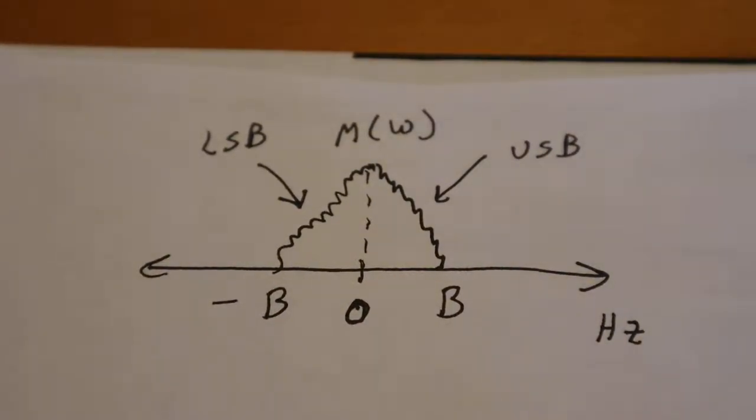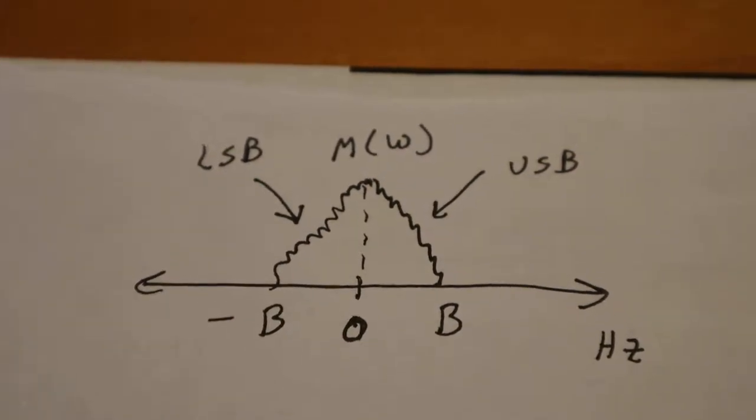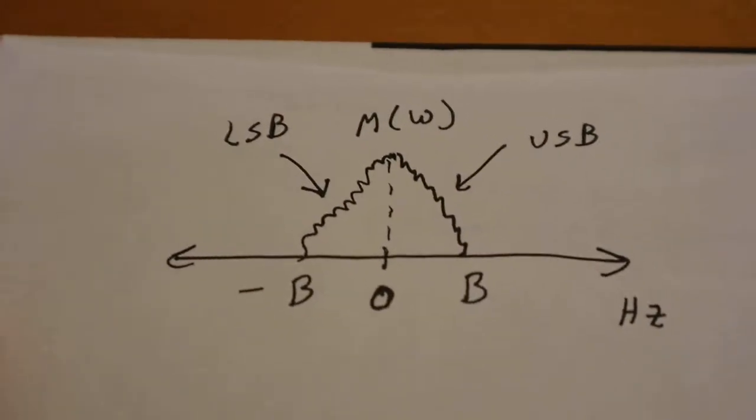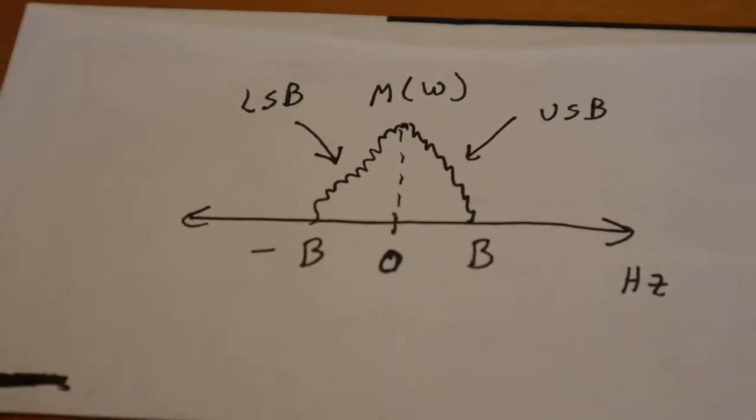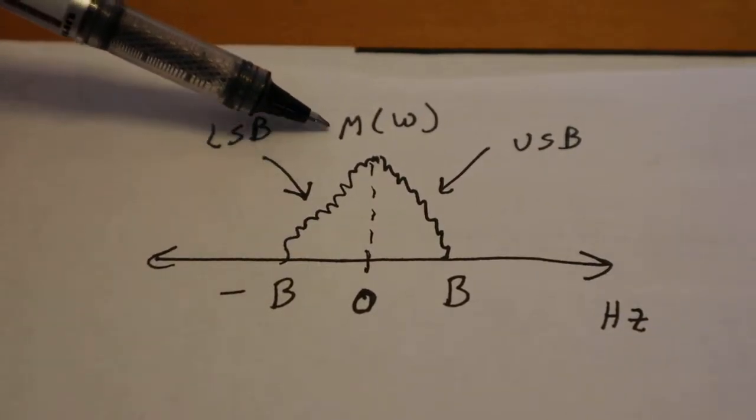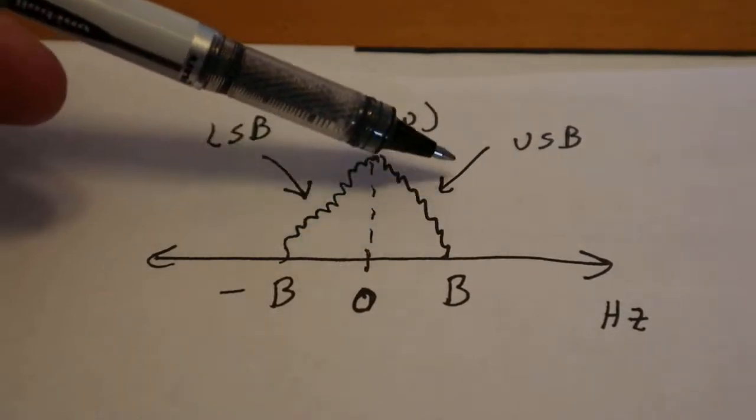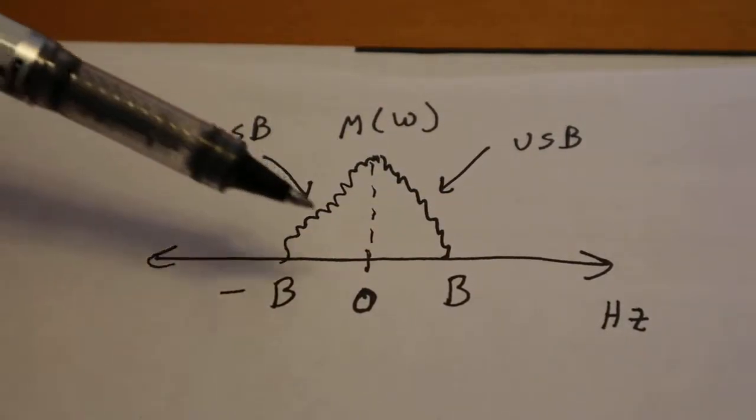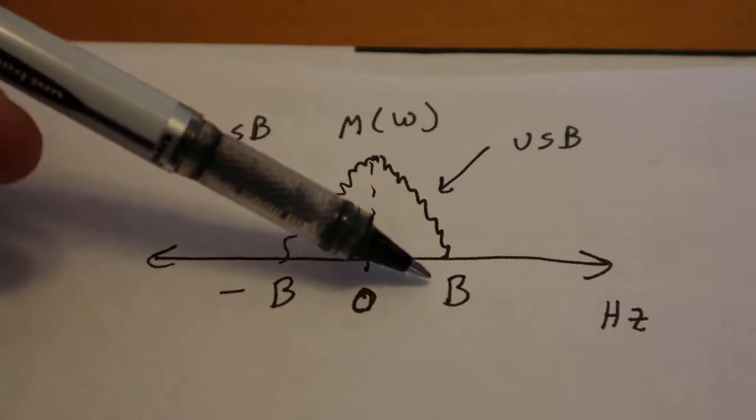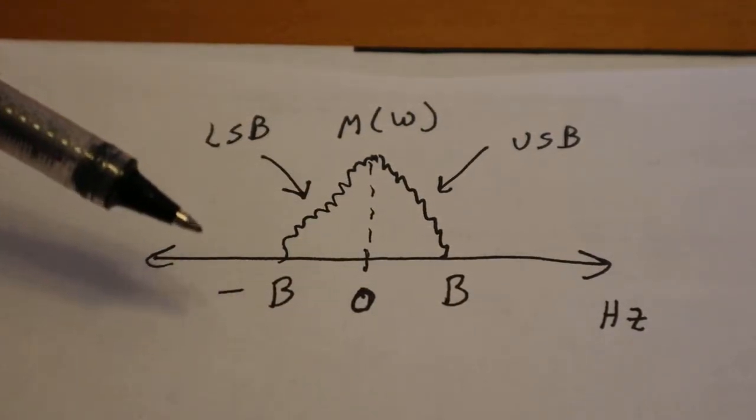Alright, so for us to get a good understanding of single sideband, we first need to understand the spectrum. So this is M of Omega, this is the spectrum of my voice, and it is comprised of an upper sideband and a lower sideband. It is centered around zero, goes up to bandwidth B, and all the way down to negative bandwidth.